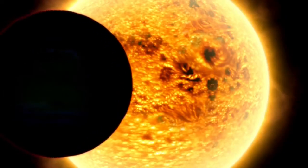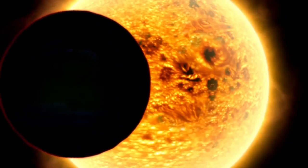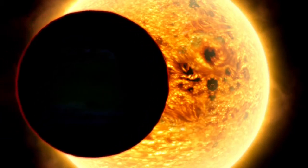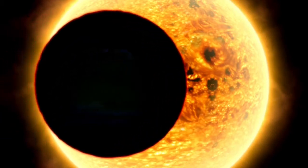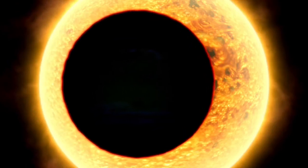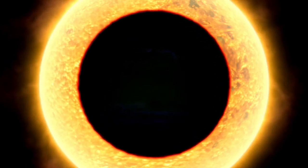Planets around other stars have been detected before, but usually indirectly by looking for clues, like the wobbling motion of a star as a planet orbits it, or a star getting dimmer as a planet passes in front of it.